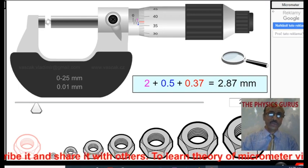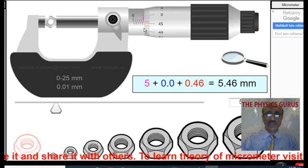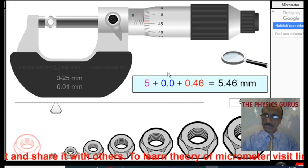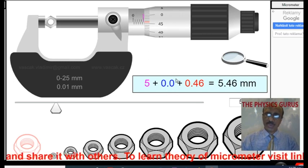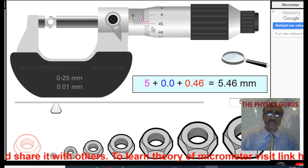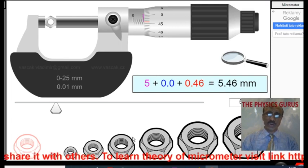Place another object. Now you can observe it is 5 but the half line mark is not visible. So that reading will be 0. The sleeve reading will be 5.0 and the other one is 45 and 46. So it will become 0.46, the answer will be 5.46.